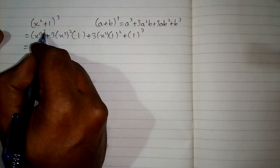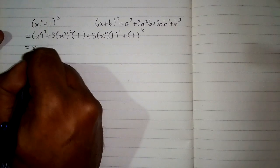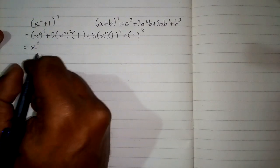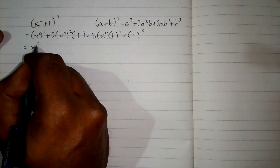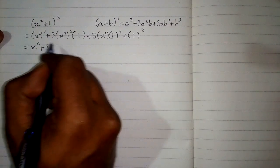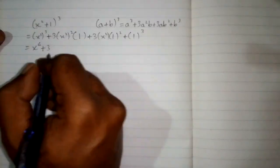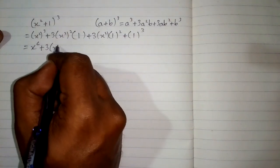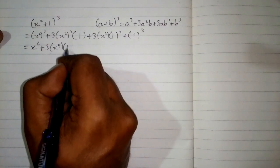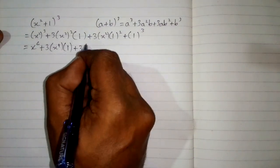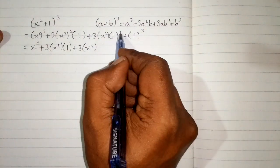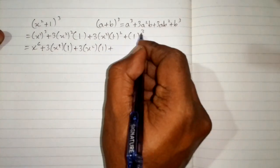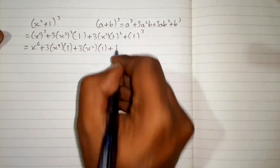The cube of x square is x to the power 6, because the powers multiply. Then 3 times the square of x square gives x to the power 4, multiplied by 1. Then 3 times x square, and the square of 1 is 1. Finally, the cube of 1 is also 1.